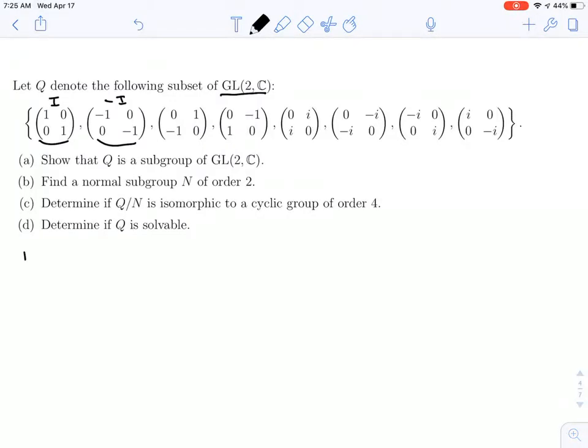So remember when we're trying to find a subgroup, first you need an identity. We did that. Then we need inverses, and we've already been able to get that. I is its own inverse, and minus I, if you square that, you get I, so that's its own inverse.